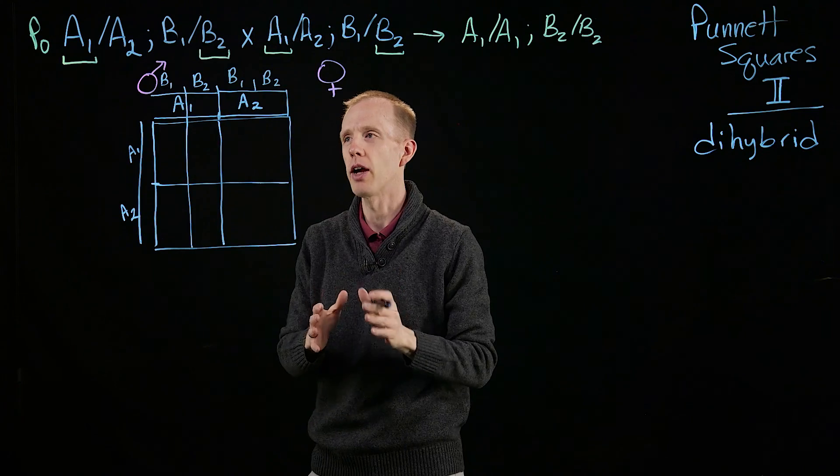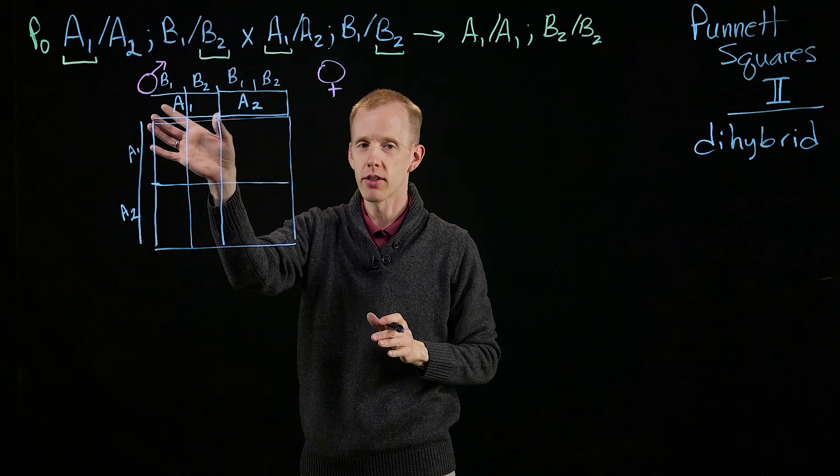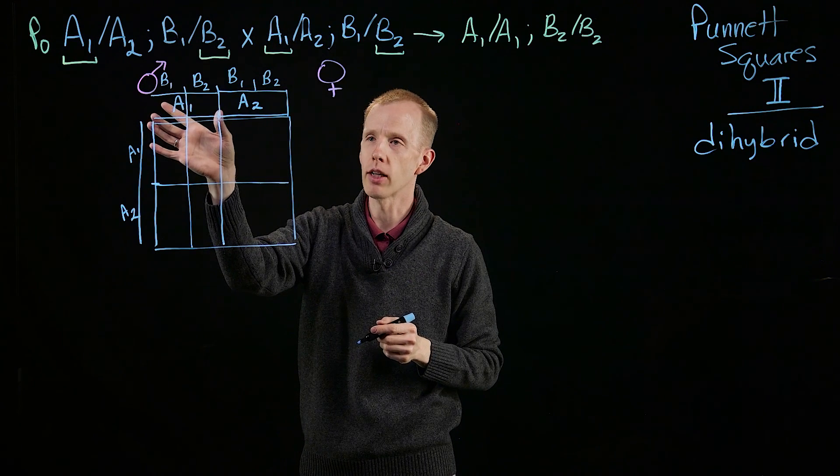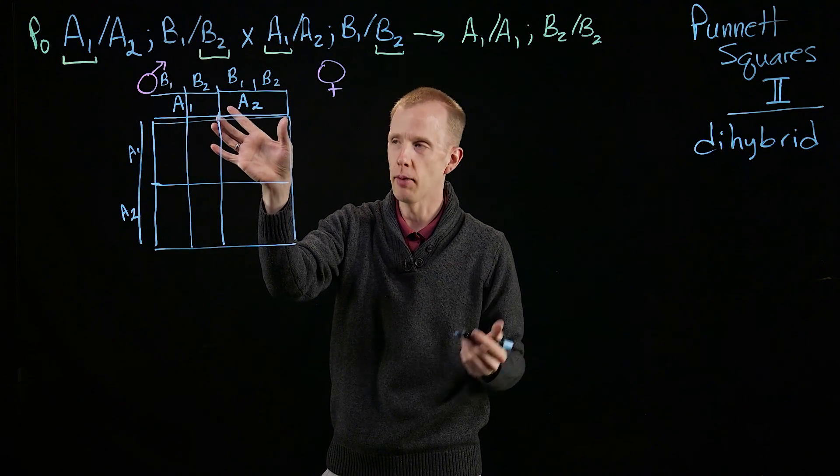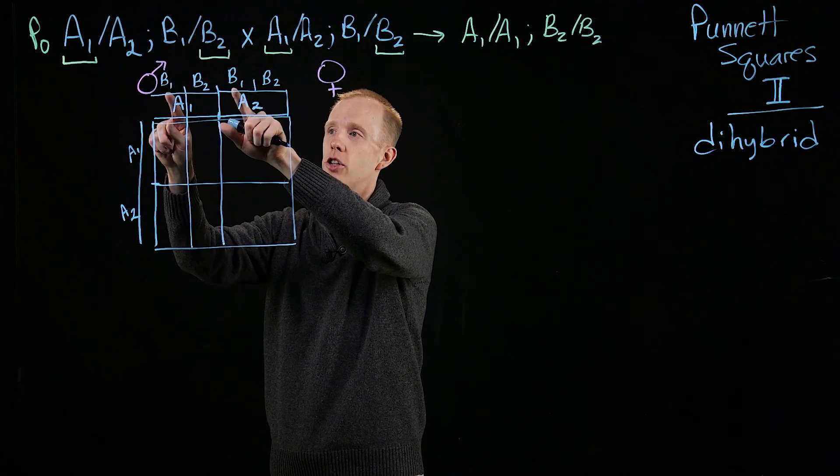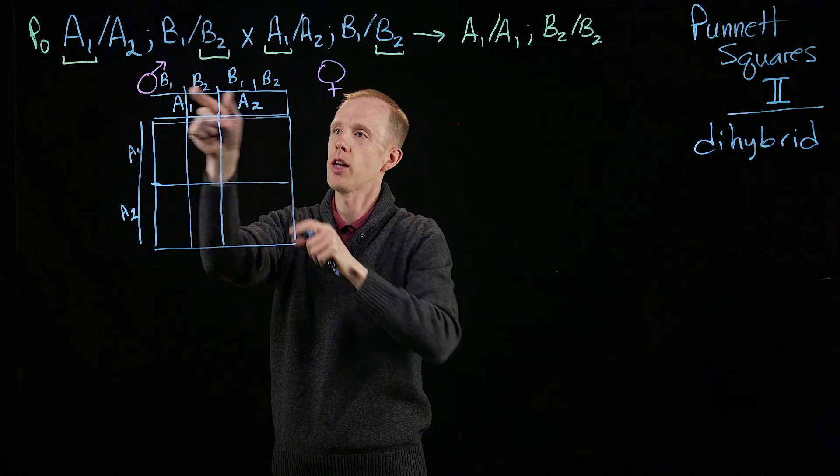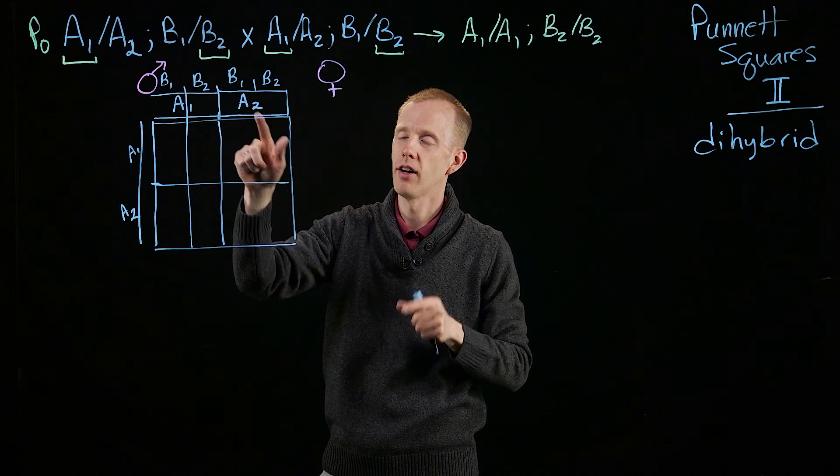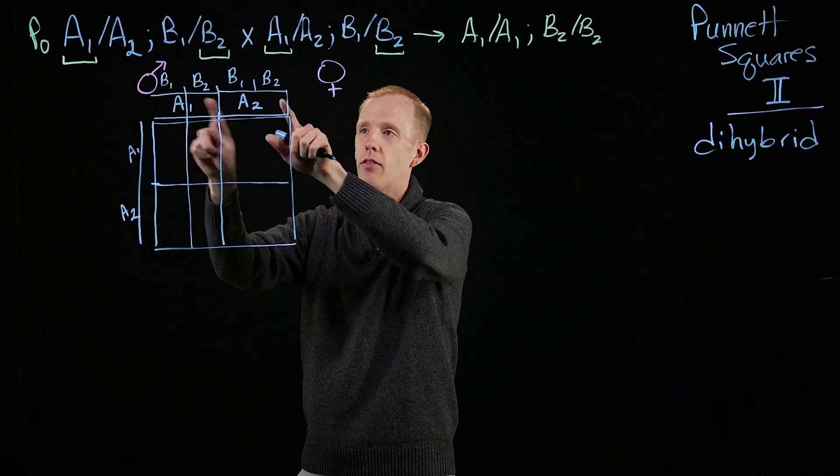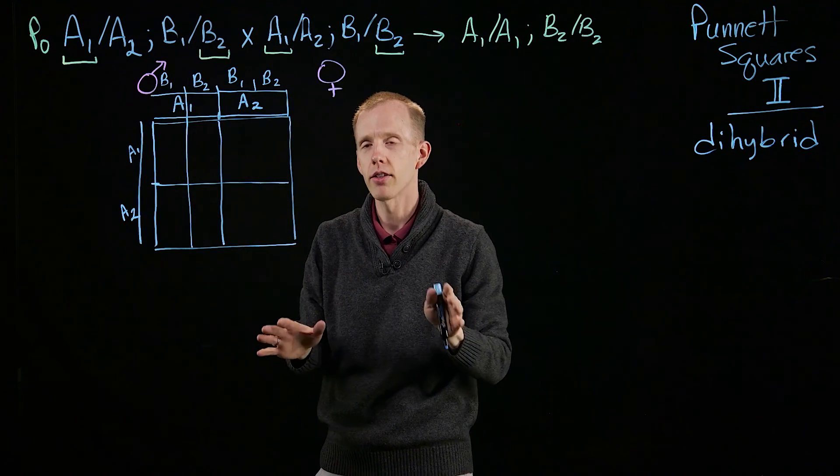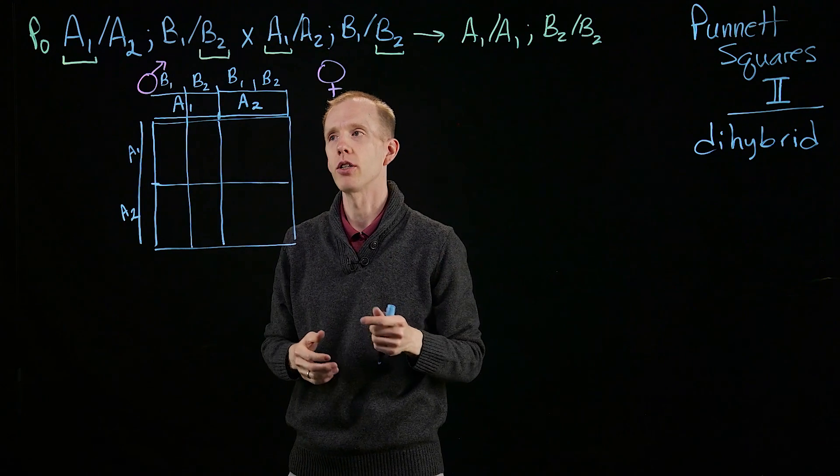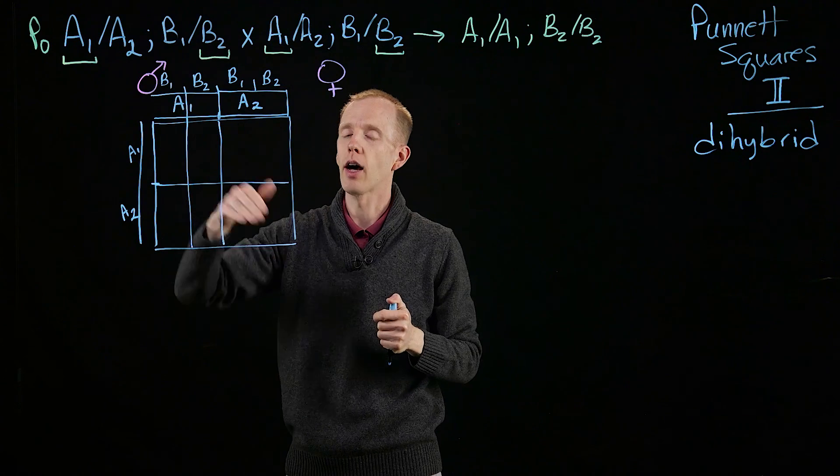So that just like we saw in meiosis, half of the gametes at one locus, locus A, gene A, half have one allele from a diploid. The other half of gametes have the other. The same is true, you can see, graphically, at the second gene, gene B. 25% plus 25%, or 50% of the gametes have allele B1. The other 50% have allele B2. So we haven't broken any laws of inheritance. We're just graphically representing the different combinations of genes and alleles that come from different loci.